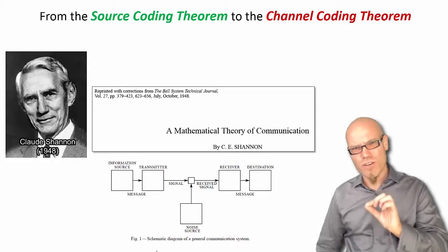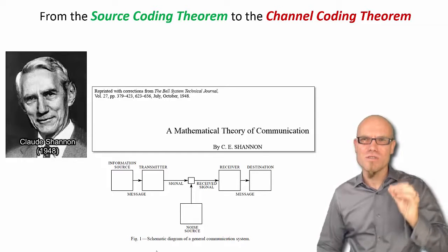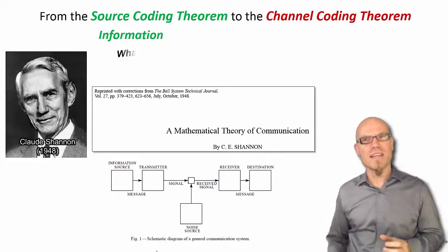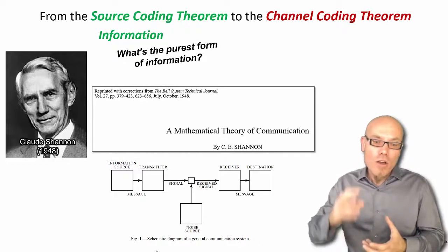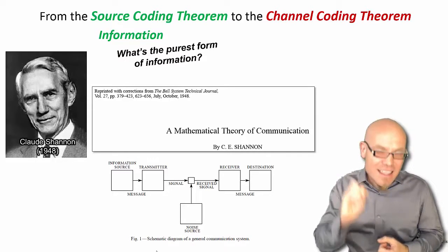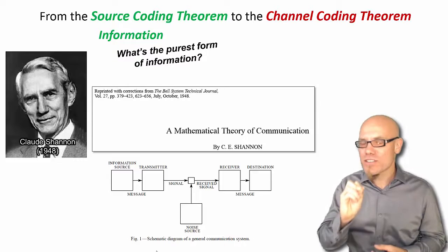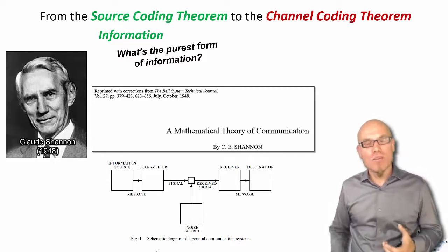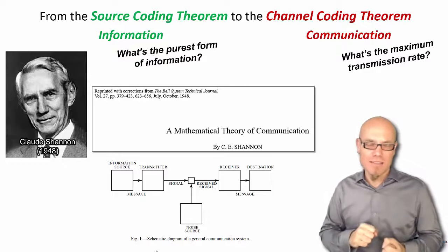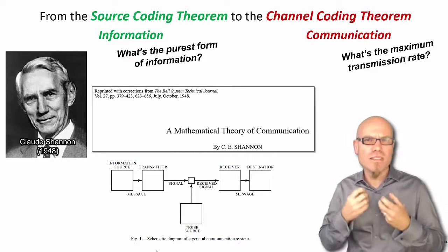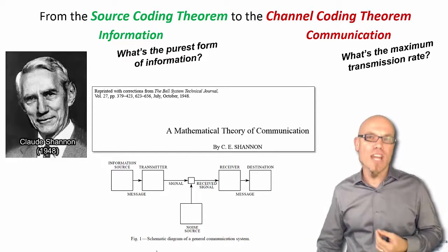Shannon had two fundamental contributions. One is the source coding theorem, the other the channel coding theorem. The source coding theorem asked the question of what is the purest form or state of information — if you take out all the redundant symbols, what is left that reduces uncertainty? He said that's information: that's the difference between data and information. That which reduces uncertainty by half is one bit. He then asked what's the maximum transmission rate over a channel — that's the channel coding theorem.